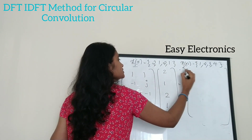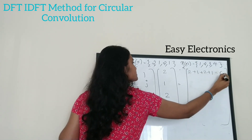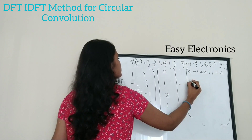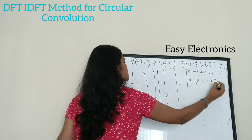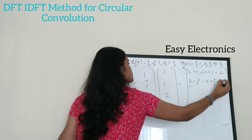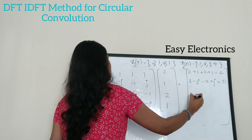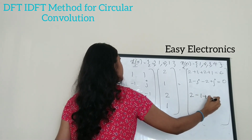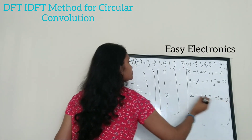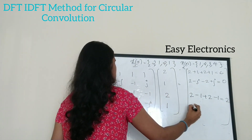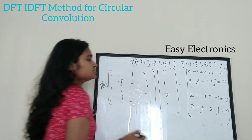Computing each row: the first row gives 2+1+2+1 = 6. The second row gives 2 − j − 2 + j = 0. The third row gives 2 − 1 + 2 − 1 = 2. The last row gives 2 + j − 2 − j = 0. So X1(k) = [6, 0, 2, 0].